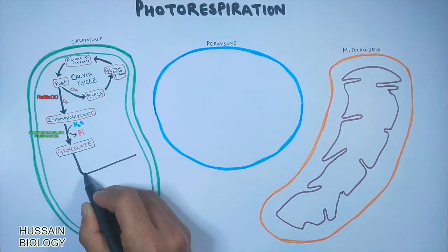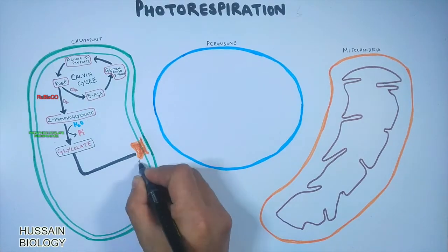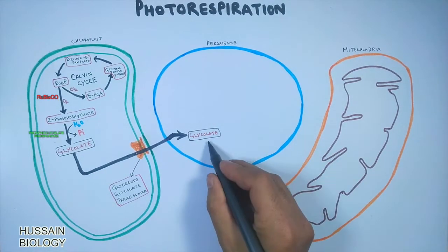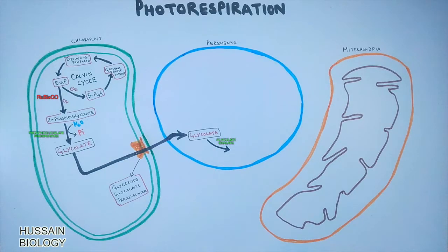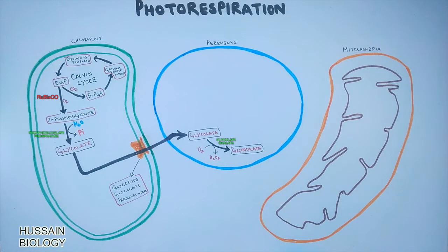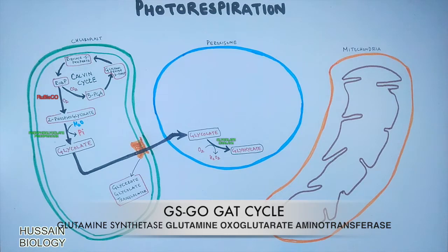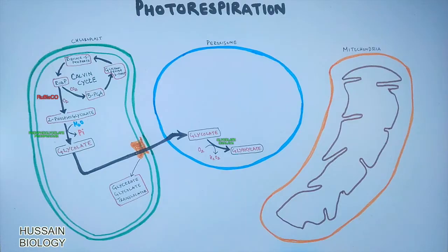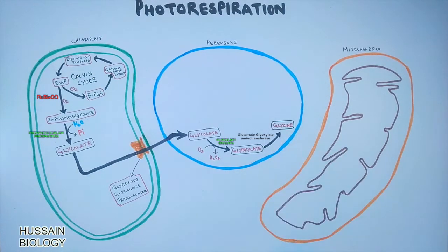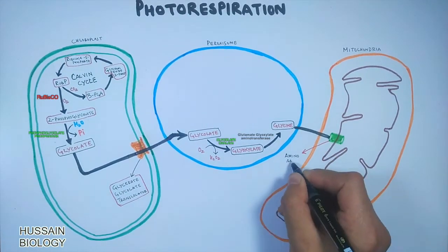Glycolate is transported from the chloroplast into the peroxisome via an inner membrane channel protein called the glycerate-glycolate translocator. In the peroxisome, glycolate is oxidized by glycolate oxidase in the presence of oxygen, yielding glyoxylate and hydrogen peroxide; the hydrogen peroxide is subsequently converted into water and oxygen by catalase. Glyoxylate then receives an amino group from the GS-GOGAT cycle (glutamine synthetase cycle, which assimilates NH3 in plants), and the enzyme glutamate-glyoxylate aminotransferase converts glyoxylate into the amino acid glycine.